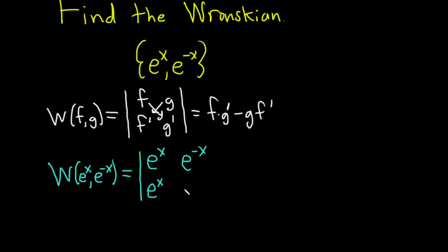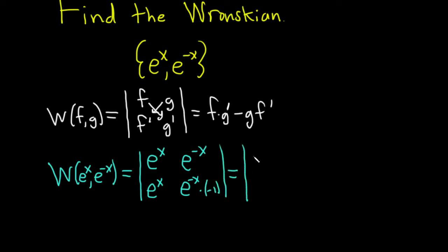You leave the inside untouched, so it would be e to the negative x, times the derivative of the inside. The inside function is negative x, so its derivative is negative 1. Writing it a bit cleaner, this is the determinant of e to the x, e to the negative x, e to the x, negative e to the negative x.